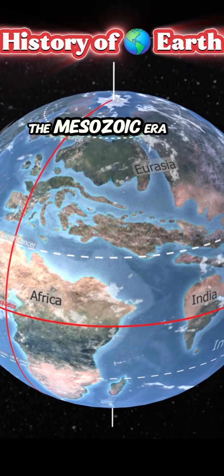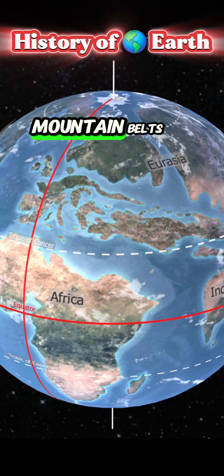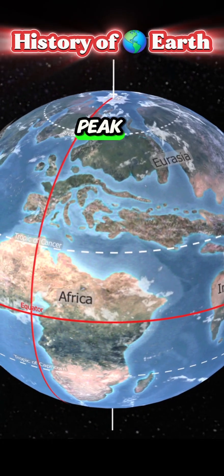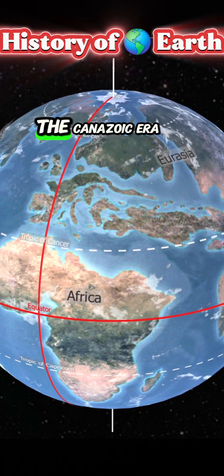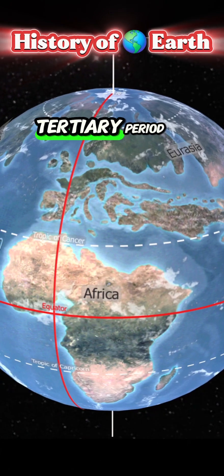The Mesozoic era was the time of dinosaurs and the formation of the Pacific and Eurasian mountain belts, which reached its peak in the tertiary period of the Cenozoic era. Mammals spread on Earth during the tertiary period.